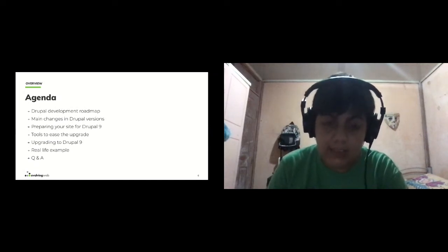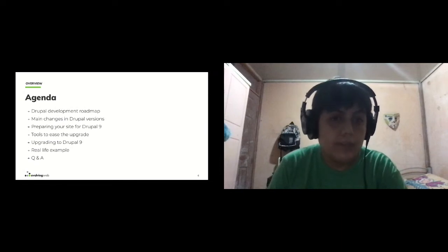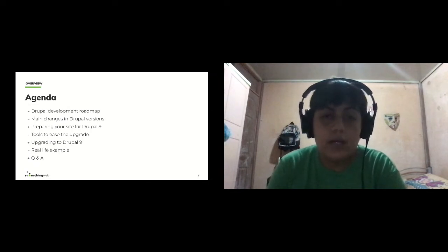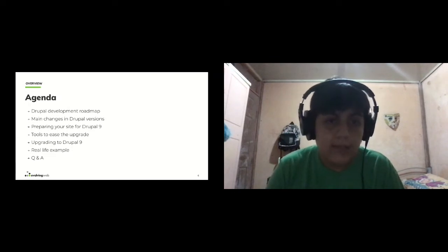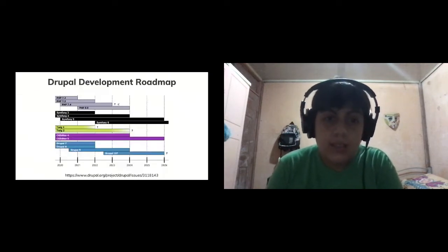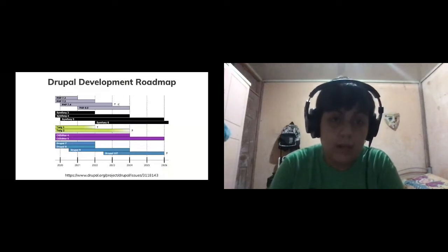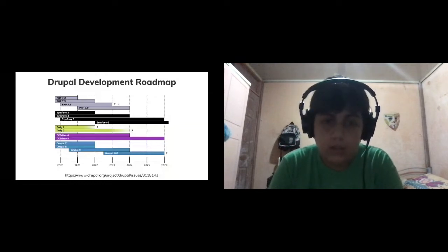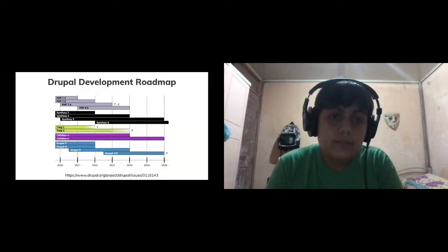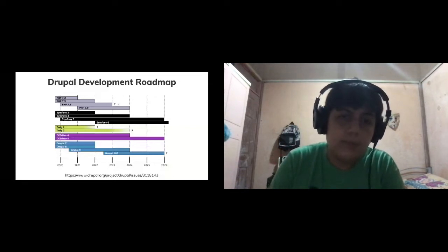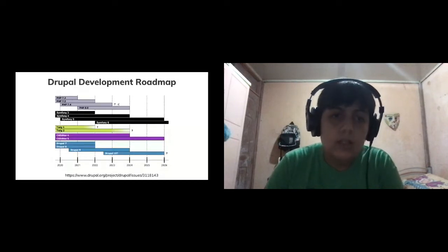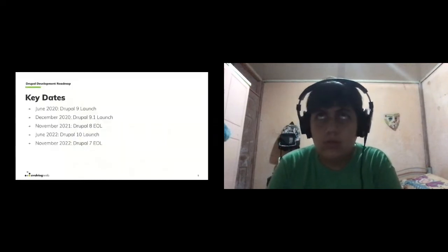Here you can see the lifecycle for the different Drupal versions. Right now we are almost at the end of 2020 and we have support for three different versions: Drupal 7, Drupal 8, and Drupal 9. Support for Drupal 8 will end at the end of next year. Drupal 7 end of life was extended one more year due to the pandemic. Drupal 9 was launched a couple of months ago and we expect Drupal 10 to be launched in June 2022.